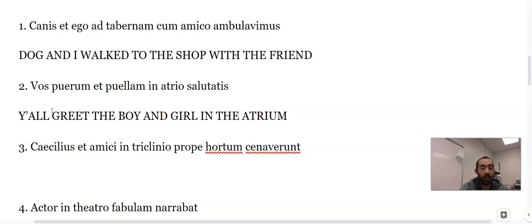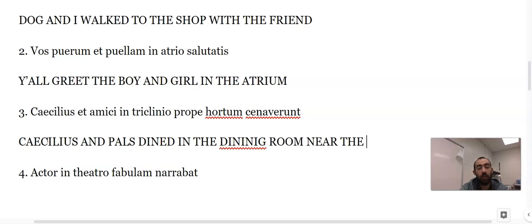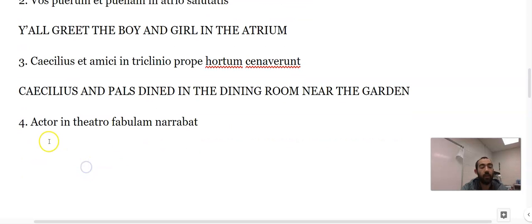Okay, this next one: Caecilius and the friends dined, cenaverunt, that's a perfect tense, in the dining room near the garden. And then actor was telling, that's a ba, that's an imperfect - a story or a play in the theater.